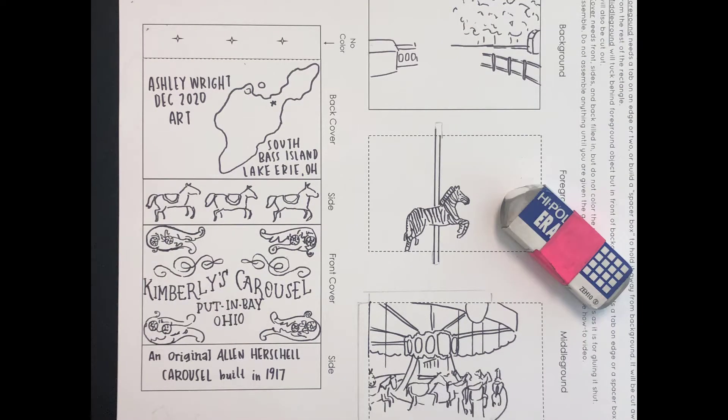After that, I need to erase any leftover pencil. My tabs can stay in pencil. If you look on the middle ground or the foreground, I have a pencil tab that is outside of that dash line that I can leave in pencil.